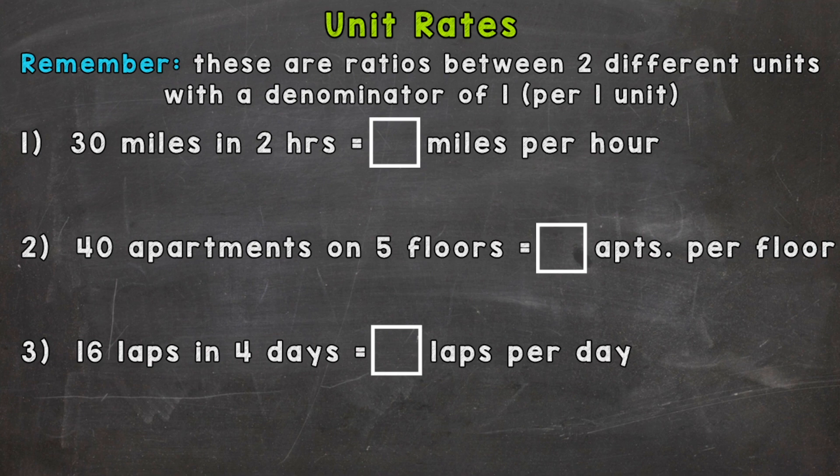So let's jump right in to number one where we have 30 miles in two hours. We need to find how many miles there are per one hour. So we find a unit rate by writing out our ratio as a fraction. So we have 30 miles per two hours.